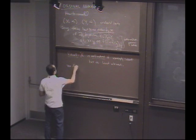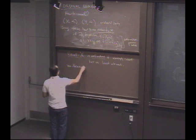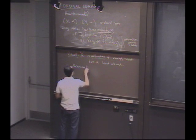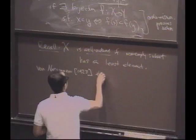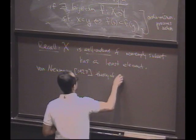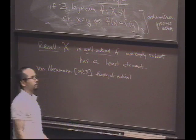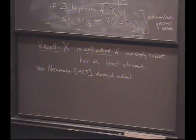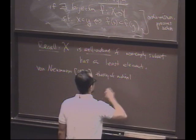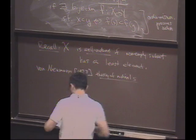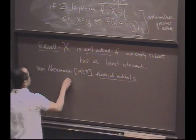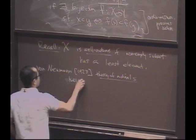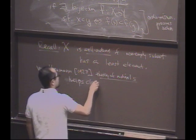So what I'm going to present to you is a theory of ordinal numbers. This is due to von Neumann, 1923 — though Georg Cantor sort of developed the beginnings of the theory of ordinals. What I'm going to show you is a slick version due to von Neumann, and the idea here is to basically classify the well-ordered sets.